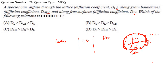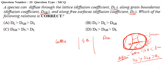Diffusion is least in the lattice. Then diffusion is higher in the grain boundary, and highest at the free surface. So diffusion coefficient of the surface is maximum, then grain boundary, then lattice: D_S > D_GB > D_L. The correct option is option D.